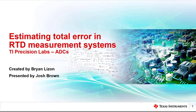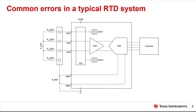To begin, let's revisit the common error sources found in RTD measurement systems that were introduced in a previous Precision Labs module. Shown here is a typical RTD measurement system that includes a four-wire RTD connected to a terminal block, a low side reference resistor, an ADC with an integrated PGA and current sources, and a controller to perform the resistance to temperature conversion. This system has several common error sources.